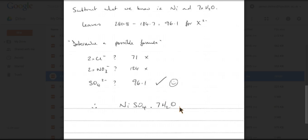And therefore the hydrated nickel 2 salt has a formula NiSO4.7H2O.